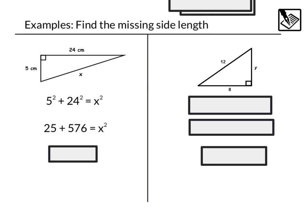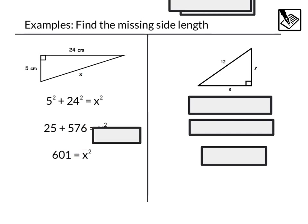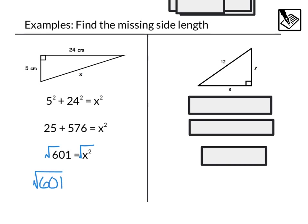From there we can evaluate the squares: 5 squared is 25, plus 24 squared is 576, equals x squared. If we combine those together, we get 25 plus 576 equals 601. To solve this, we take the square root of both sides, which gives us a side length of square root of 601, which is approximately 24.5.